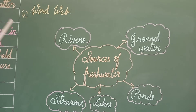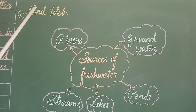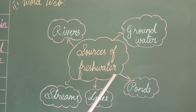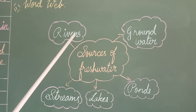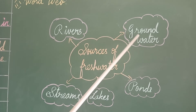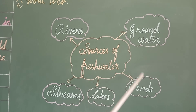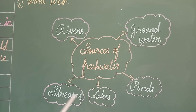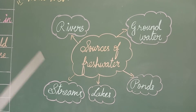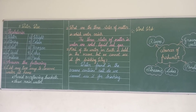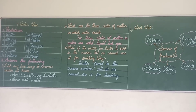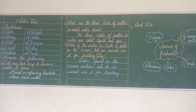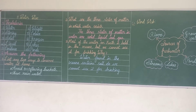Third Roman: word wall. Sources of fresh water: rivers, groundwater, ponds, lakes, streams. Dear students, write this in your fan art with neat handwriting. Thank you.